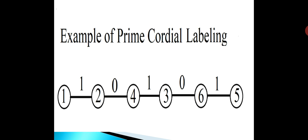Here is an example of prime cordial labeling. In this graph the vertex set is {1, 2, 3, 4, 5, 6} and the edge label set is {0, 1}. In the first edge the GCD of 1 and 2 is 1, so we assign the edge the label 1. In the second edge the GCD of 2 and 4 is 2, which is greater than 1, so we assign the second edge the label 0.